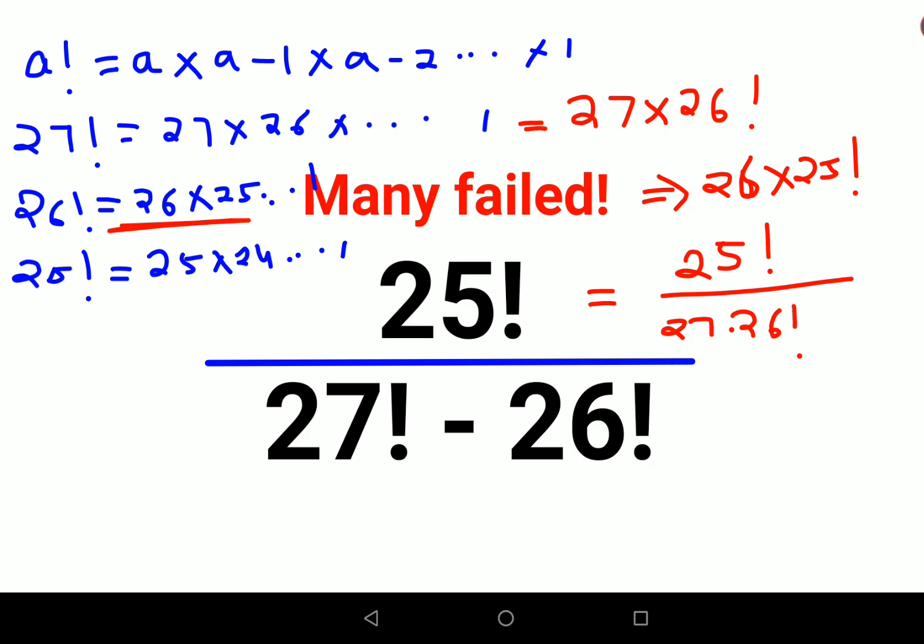So now in my numerator I will have 25 factorial upon 26 factorial, and here I am left with 27 minus 1.